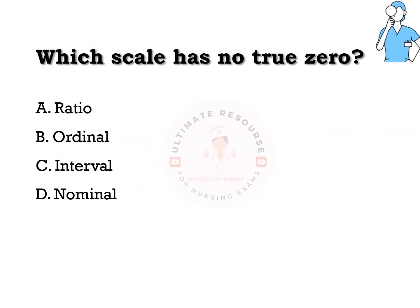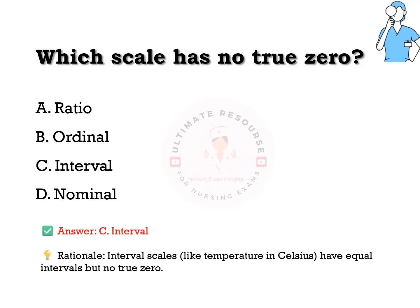Which scale has no true zero? Options are a) ratio, b) ordinal, c) interval, d) nominal. The answer is c) interval. Interval scales, such as temperature in Celsius, have equal intervals but no true zero.